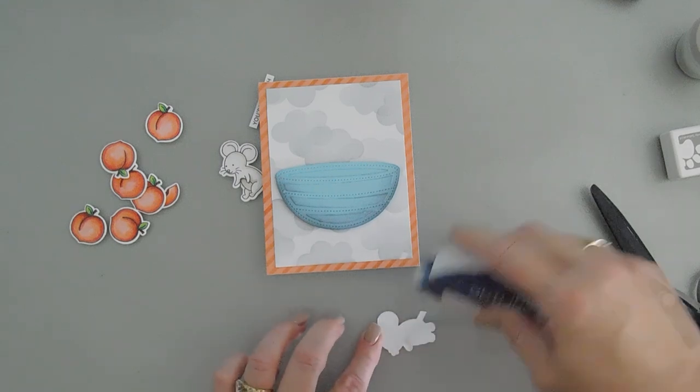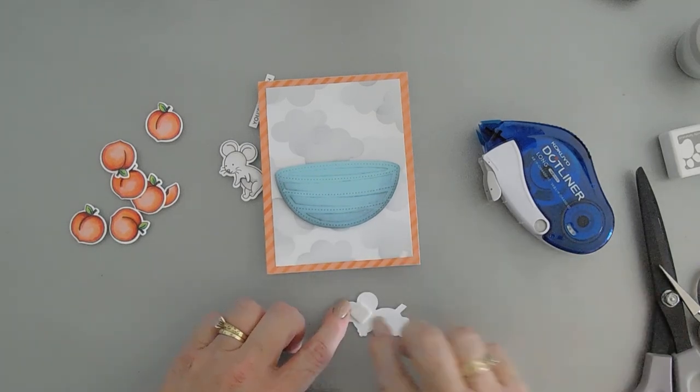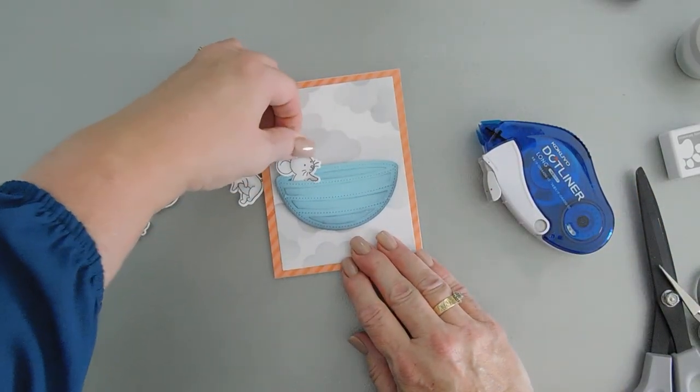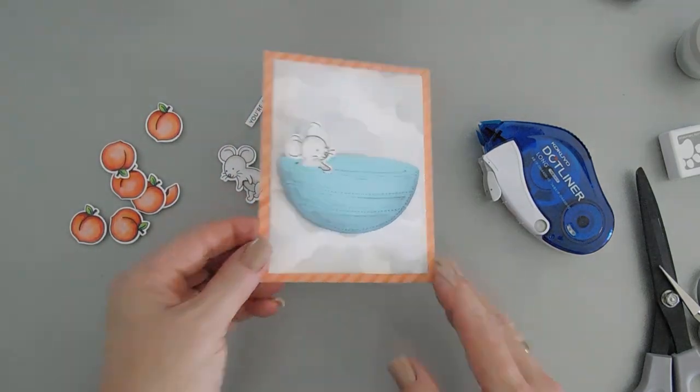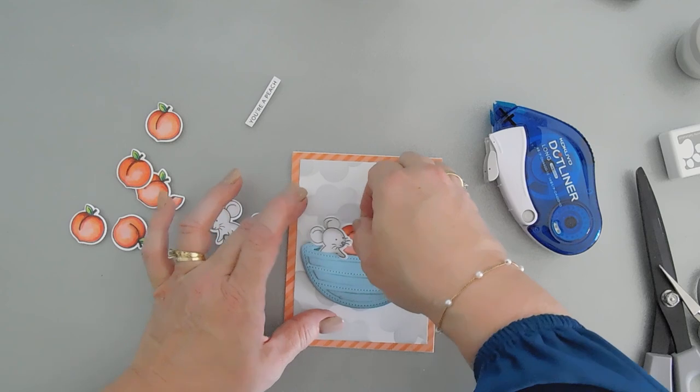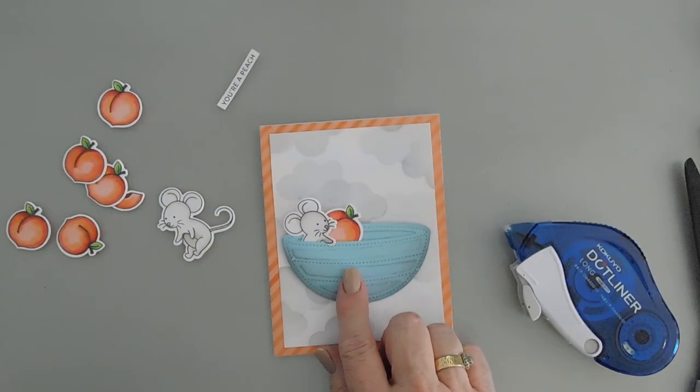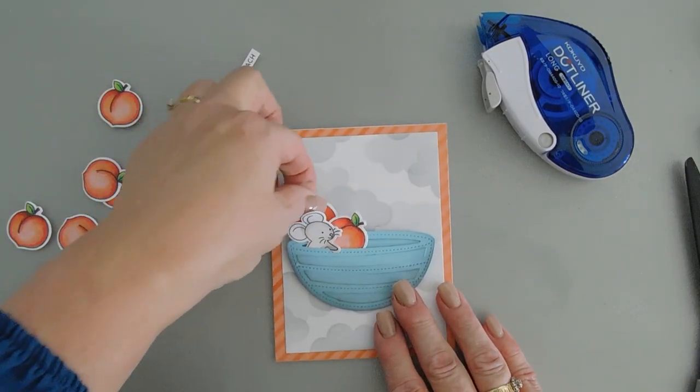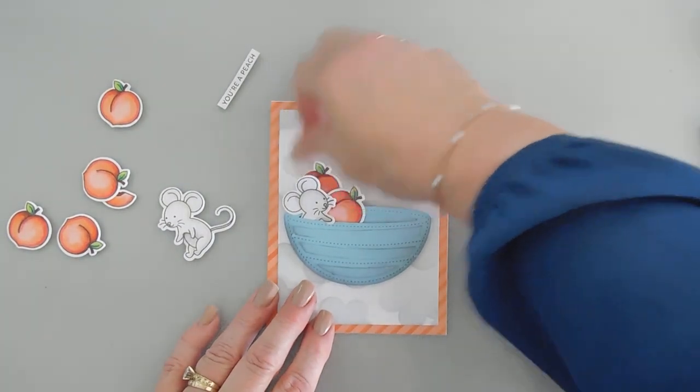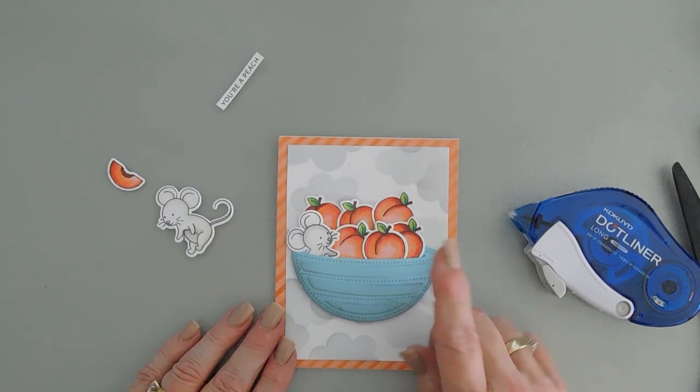Now we're going to take this little guy. I'm going to add some adhesive behind it and I'm going to put a foam square behind the top of him. He's going to go in first and remember we cut his hand so his hand can overlap on the bowl like that. I think this really cute. Okay and then what we're going to do is go ahead and fill in our background with the peaches.